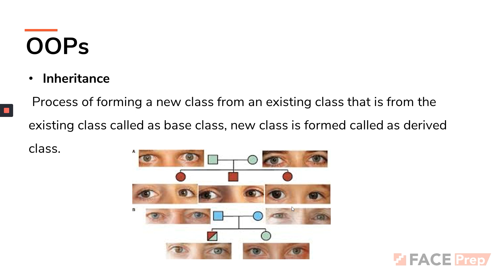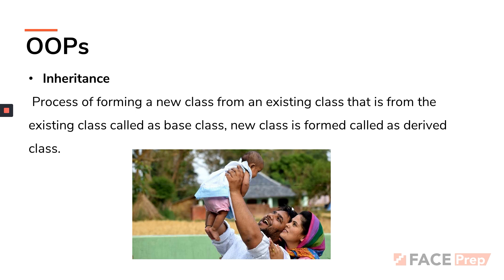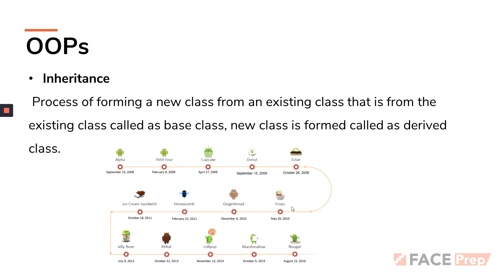Inheritance supports code reusability — you can just use code present in other portions of the program. One more example is your properties: if your father has gathered a lot of money, you'll be able to use that same money, and that is called inheritance. One more example is Android versions: with every update — whether Lollipop, KitKat, or whatever — it will have features of the previous version. You can see that it has inherited basic features from previous versions, with add-ons and updates on top.